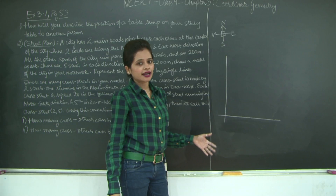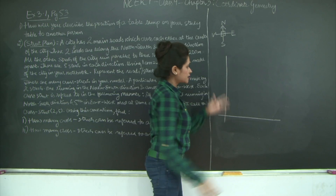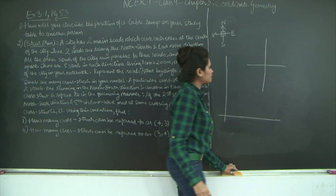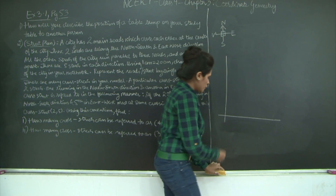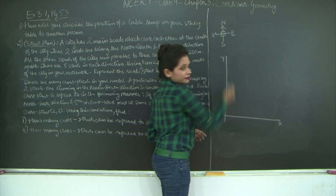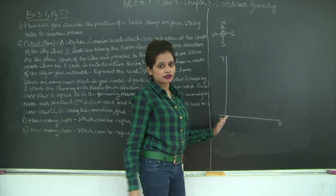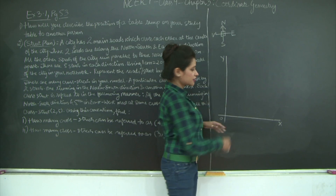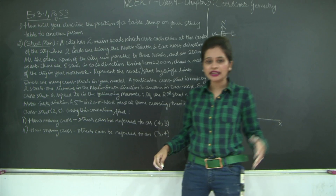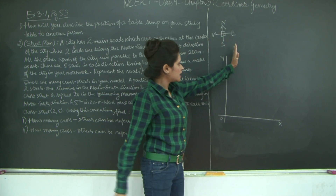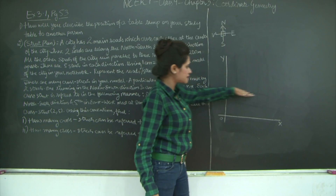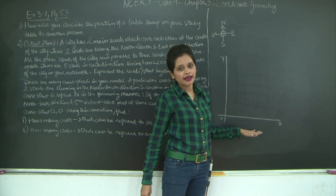So my two roads intersect each other at right angles — one in the north-south direction and one in the east-west direction. I will call the point of intersection O, the horizontal road X, and the vertical road (along north-south) Y. All other streets of the city run parallel to these roads — some parallel to street Y and some horizontal parallel to street X.